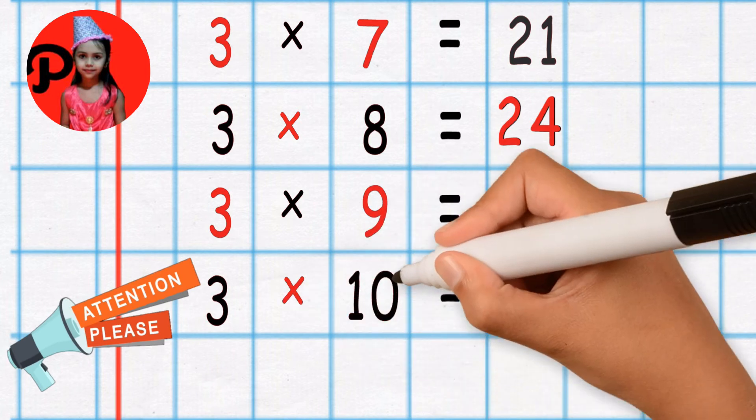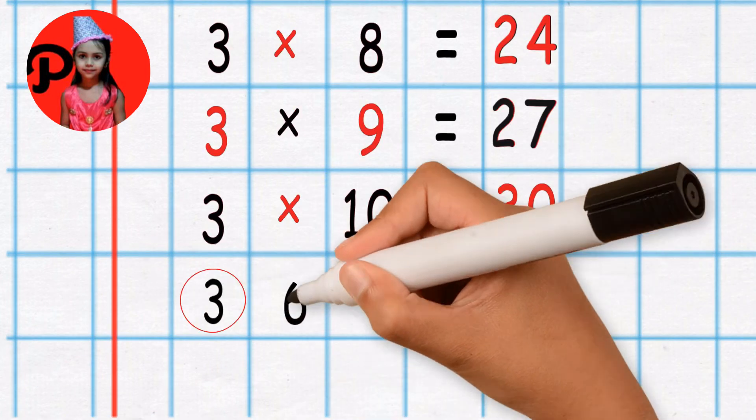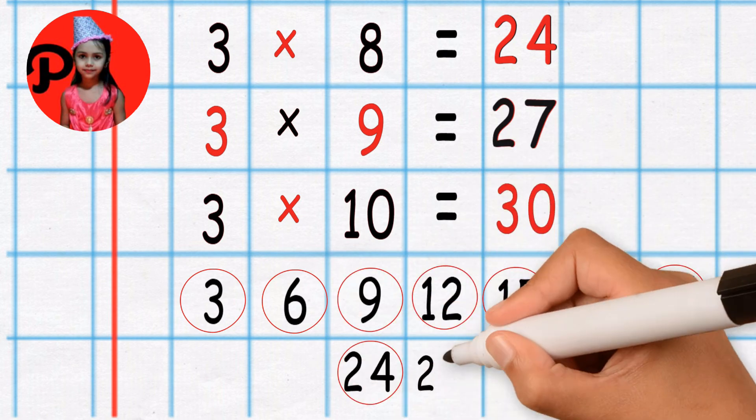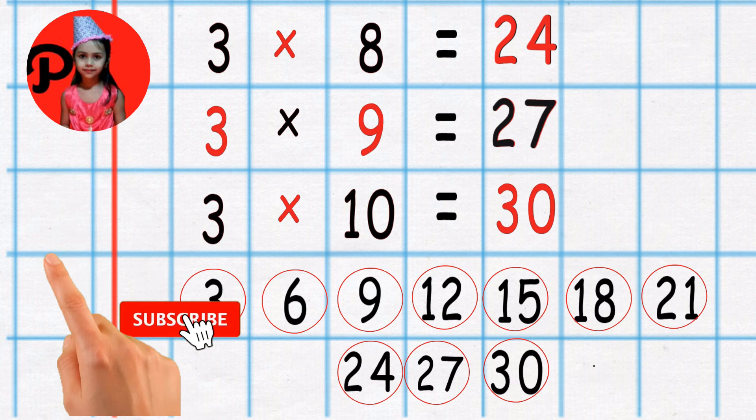3 10's are 30. 3 10's are 30. So it's like 3, 6, 9, 12, 15, 18, 21, 24, 27, 30. Thanks for watching kids. Hope you like it. Bye. Bye.